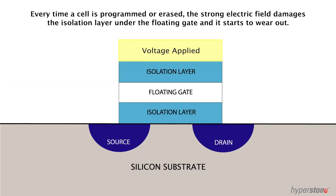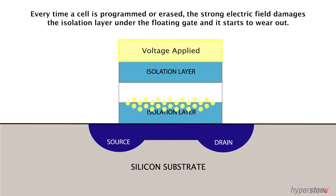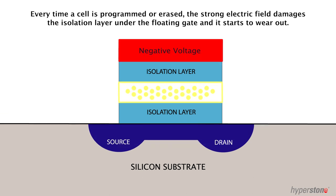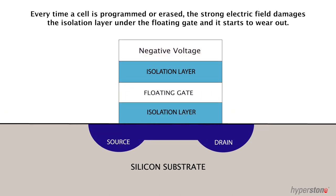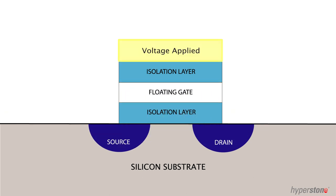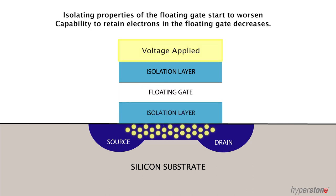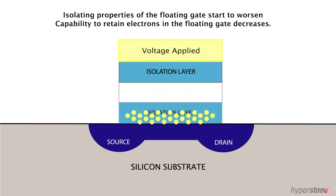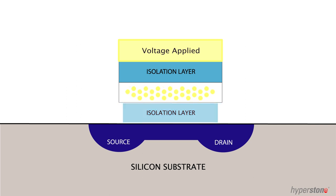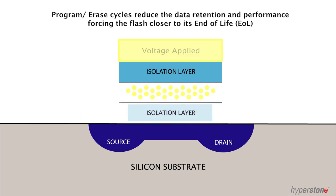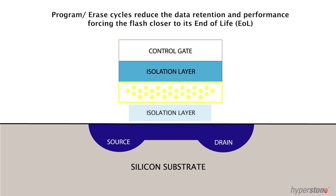Every time a cell is programmed or erased, the strong electric field damages the isolation layer under the floating gate and it starts to wear out. As the isolating properties of the layer start to worsen, the capability to retain the electrons stored in the floating gate decreases. This in turn reduces the data retention and performance and forces the flash closer to its end of life.